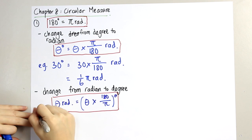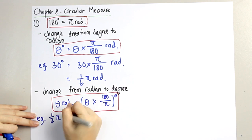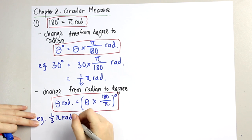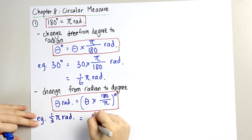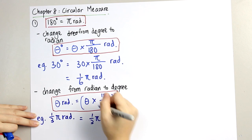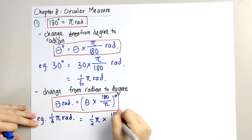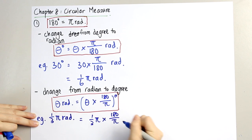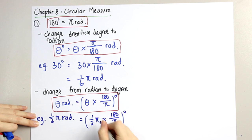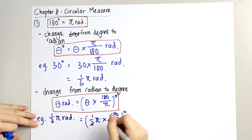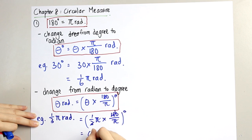Here is an example. Let's say we are given 1 over 3 pi radian. We take 1 over 3 pi, which is theta, and multiply by 180 over pi according to the formula. What we get is 60 degrees.